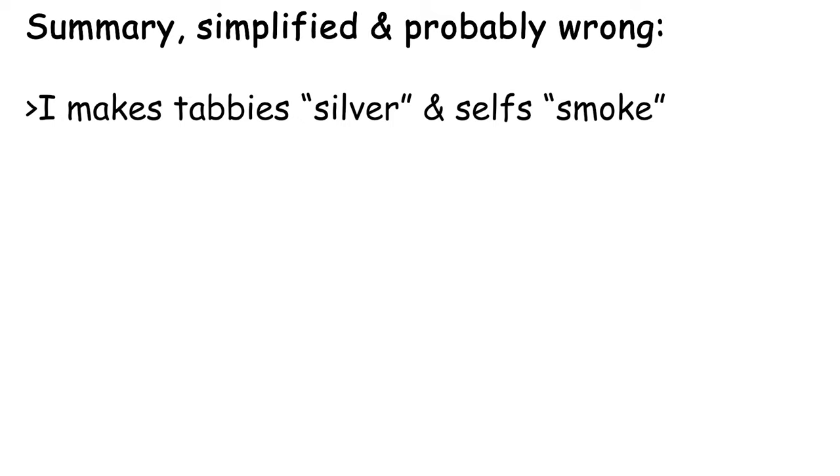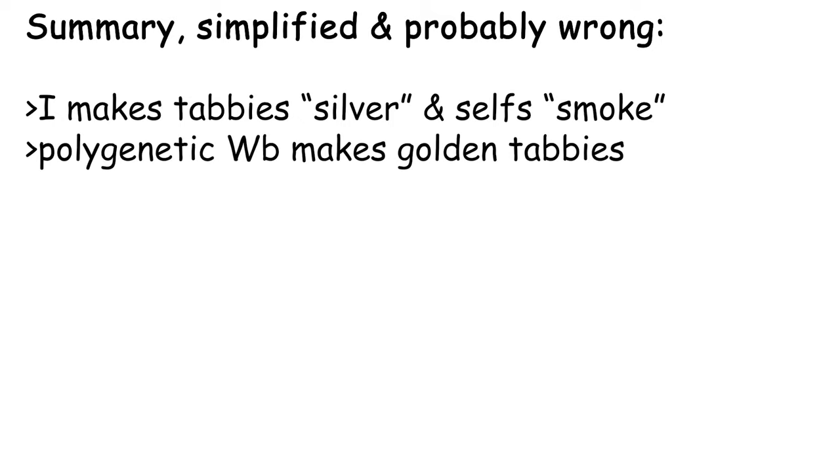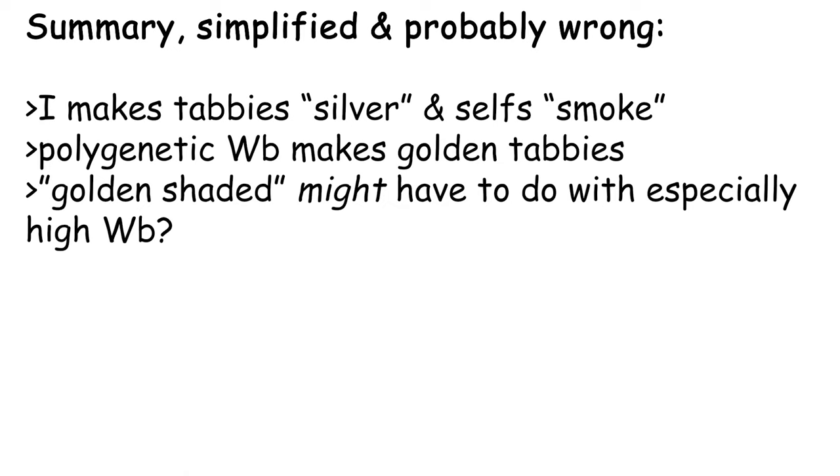Inhibitor makes a tabby cat silver and a self-cat smoke. Wideband is polygenetic and makes a tabby cat golden, but does not affect selfs. High levels of widebanding might make a cat golden shaded.